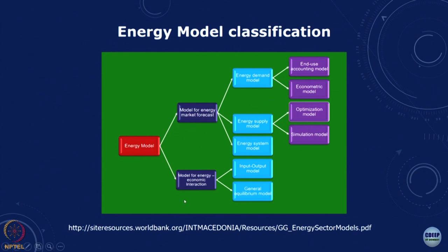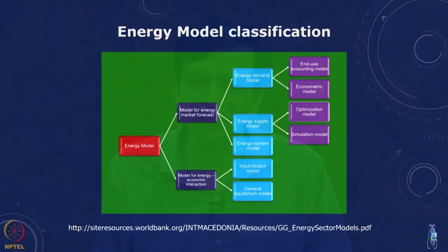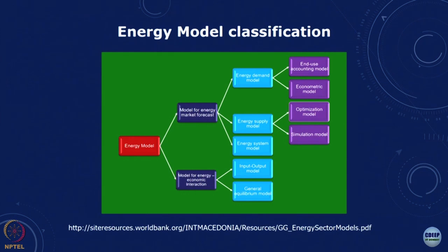There are different kinds of models available in the literature for looking at energy-economic interactions. These can be classified: the simplest kind of model is the input-output model, which is what we will study. There are also optimization models and simulation models, models like MARKAL, computable general equilibrium models, and models for estimating demand based on end-use accounting and econometric methods. In this course, we will focus on the input-output model, which gives us a way to analyze the impacts of the energy sector on the rest of the economy.